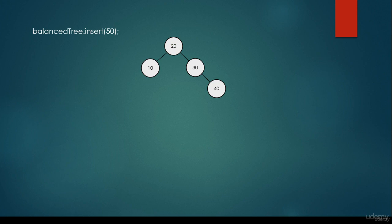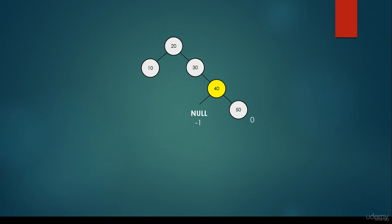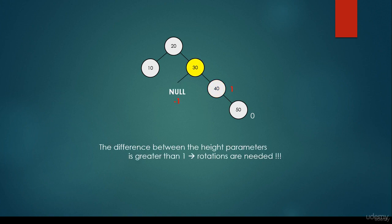50 is greater than the root node, so we go to the right. 50 is greater than 30, so we go to the right. 50 is greater than 40, so we insert it as the right child of 40. Node 50 is a leaf node, so it is balanced. Node 40 has a null left child with height minus 1 and right child 50 with height 0 — this subtree is balanced. Node 30 has a null left pointer with height minus 1 and the right subtree starting at node 40 with height 1. The difference is greater than 1, so we have to make a rotation — this is the doubly right-heavy situation, so we rotate node 30 to the left.